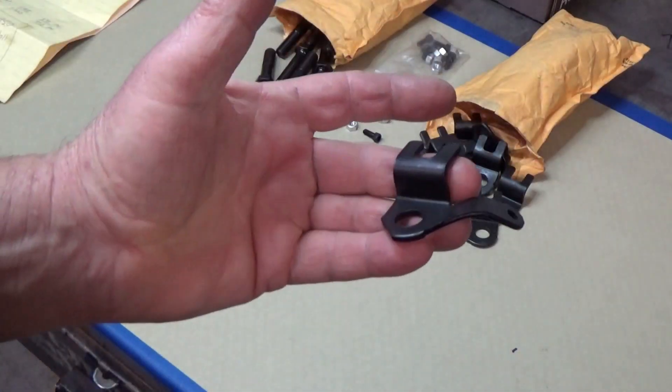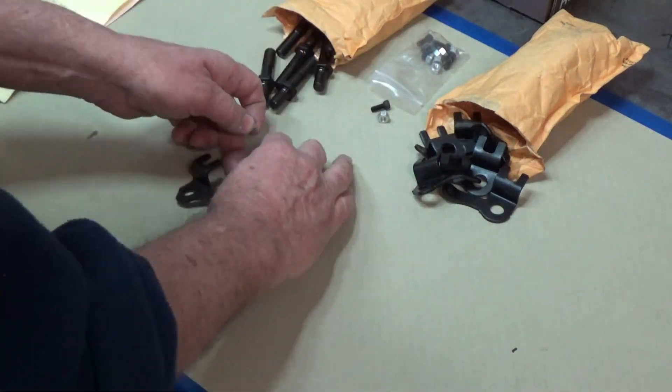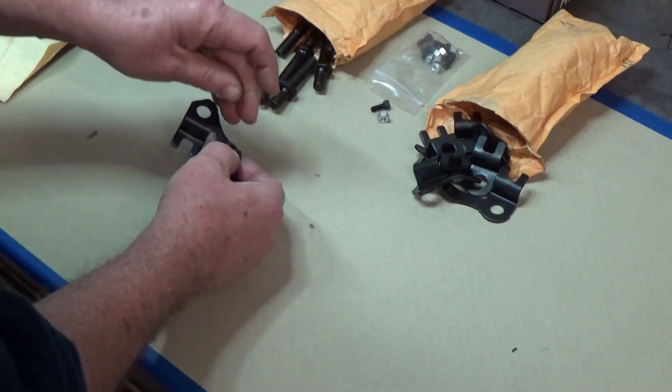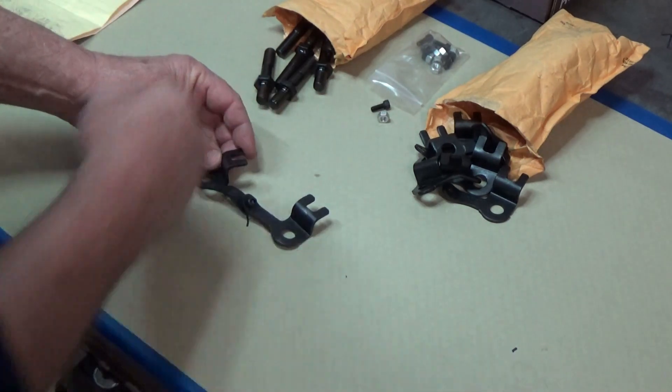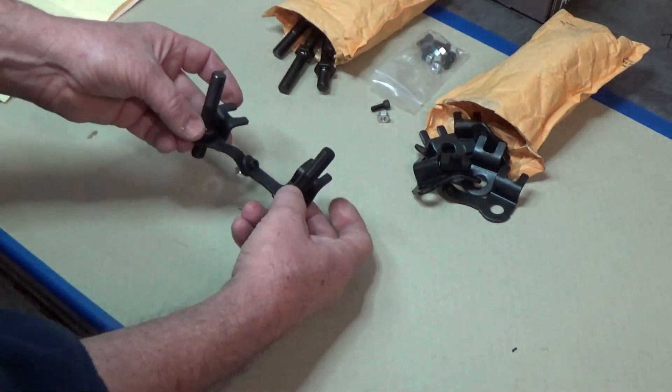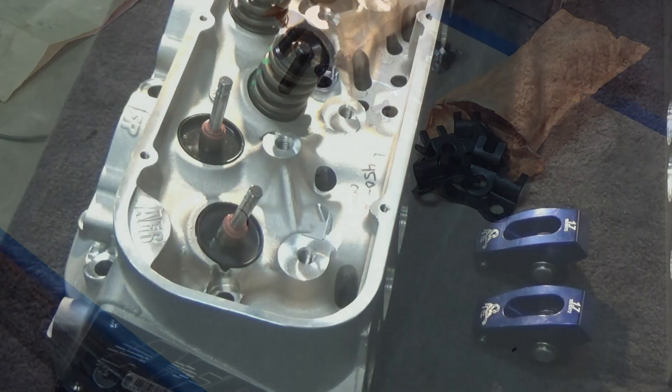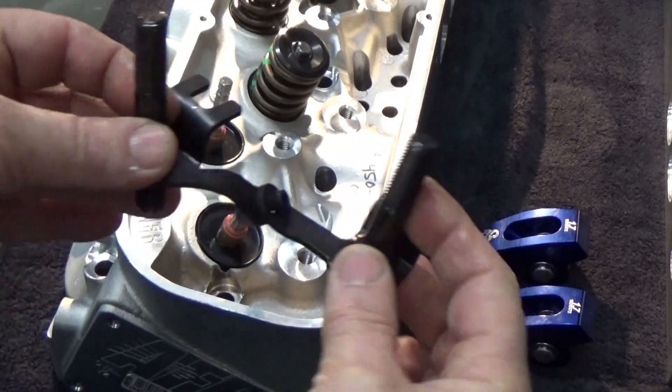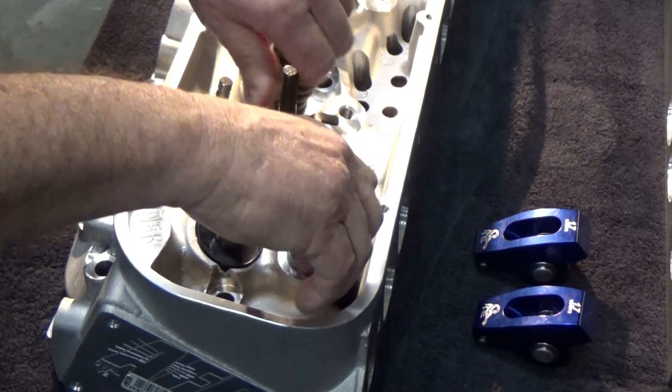All right, so now on those push rod guide plates, they come in two sections. Now anybody who's built engines before, you know to get your rocker arms lined up on your valves, sometimes you have to move the guide plates around to get them to center your valve guides. So that's what I think they did here, is by having it move in the center.